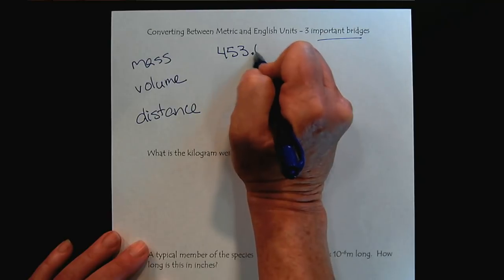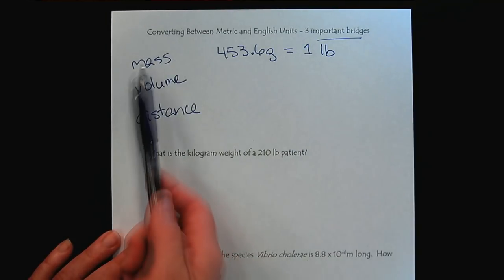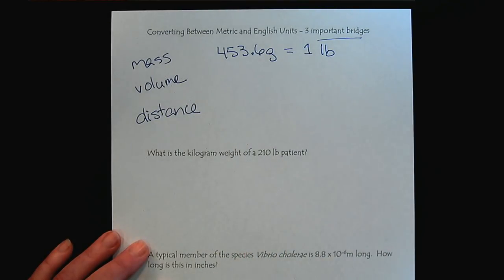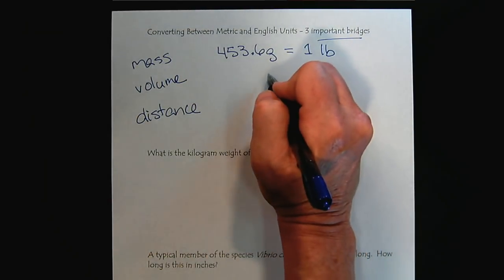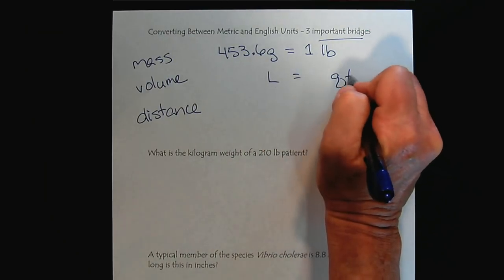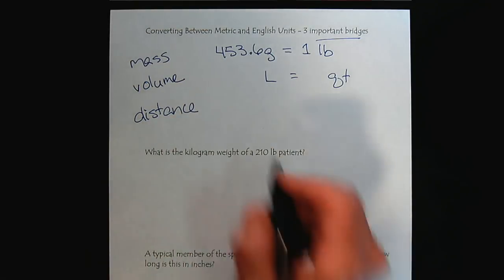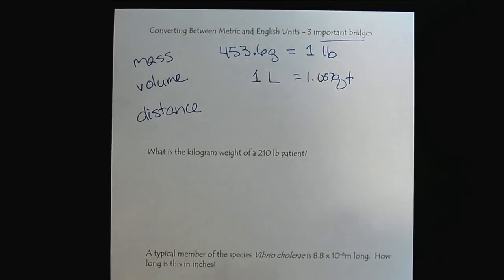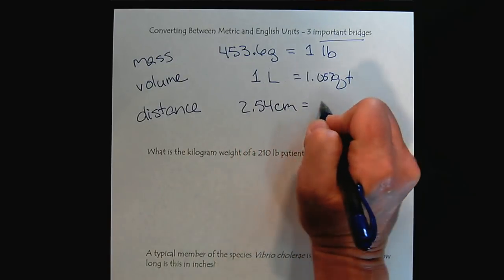And so I will share with you my favorite bridges, but you can have your own bridges. So for me, 453.6 grams equals one pound. When I'm looking at a mass conversion from the metric to the English system, this is the conversion that pops into my brain. If you have another one, that's fine. Volume. So when we're converting between volumes, I like to go from liters to quarts. So for every liter, we have 1.057 quarts.